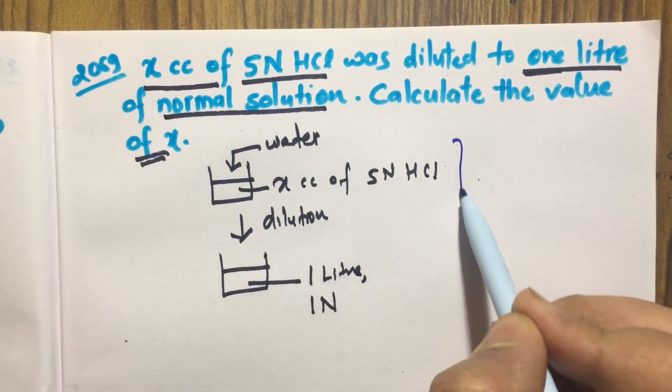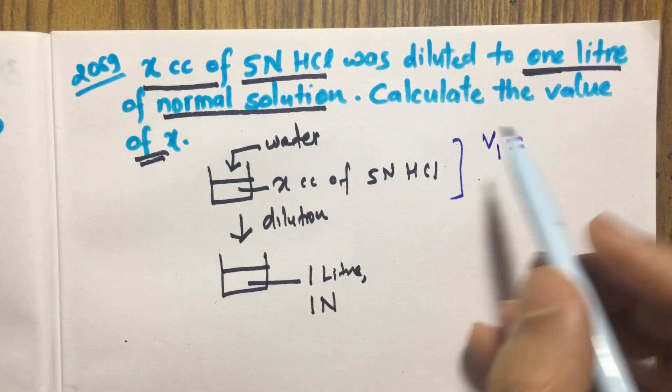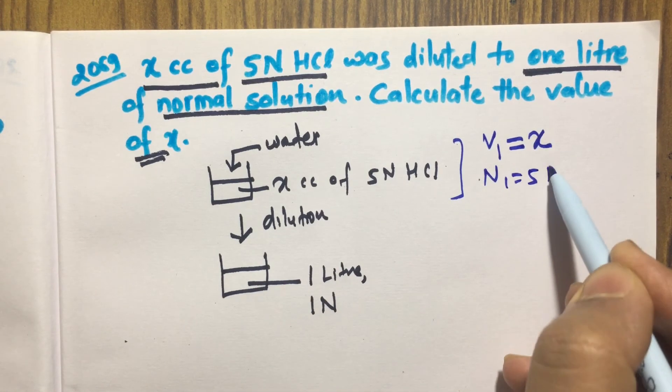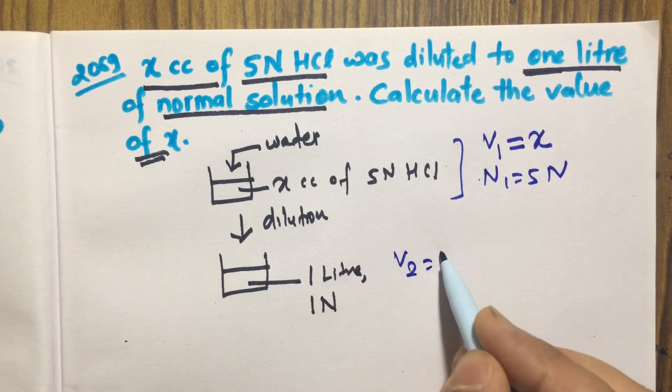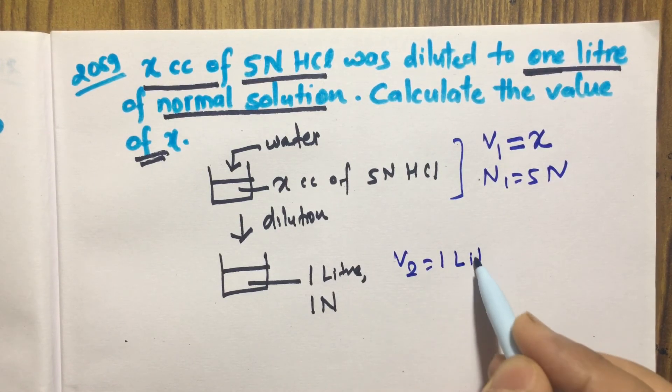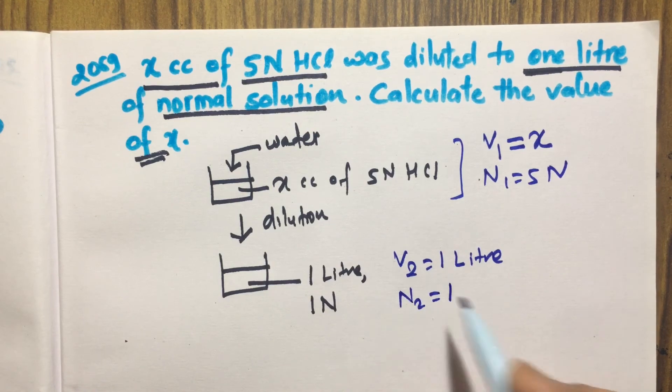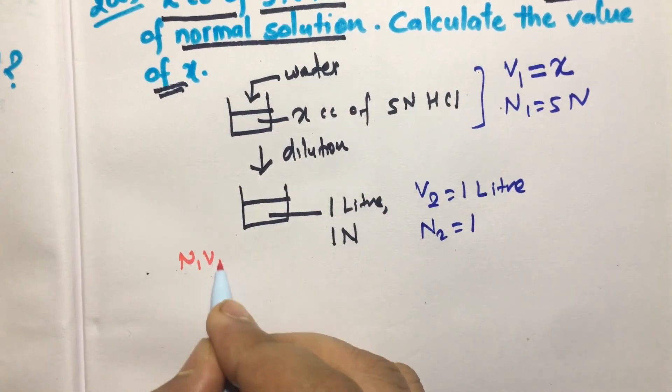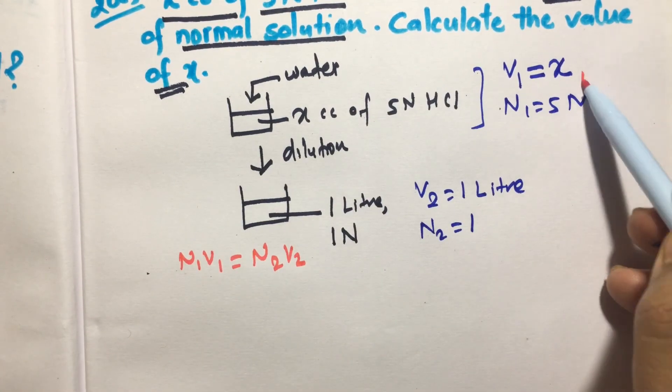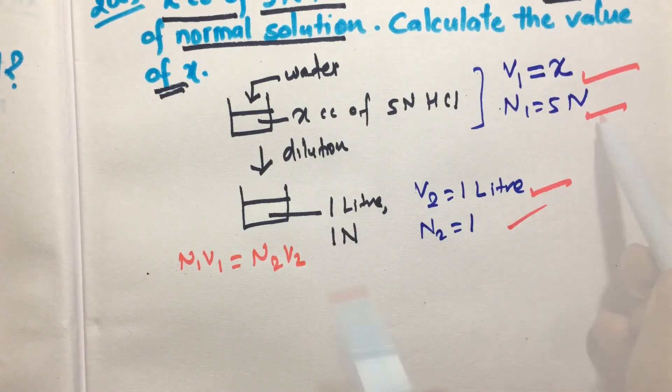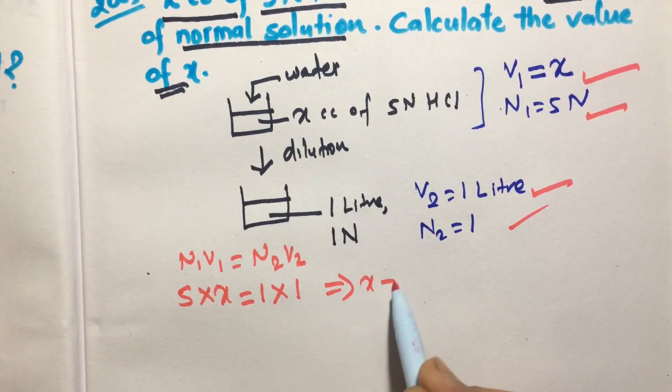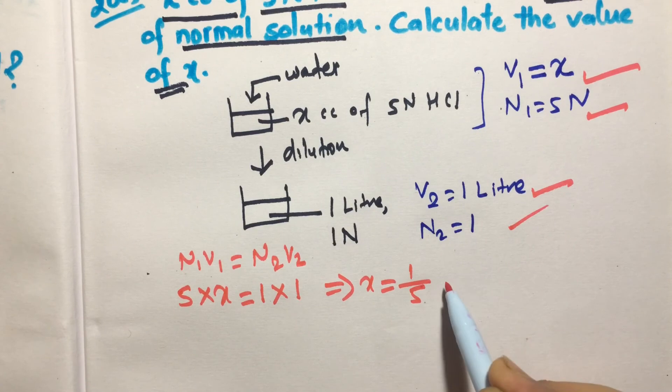In first case, initially V₁ is X cc, N₁ is 5N, V₂ is 1 liter, N₂ is 1. By using formula N₁V₁ equals N₂V₂: N₁ is 5, V₁ is X, N₂ is 1, V₂ is 1.